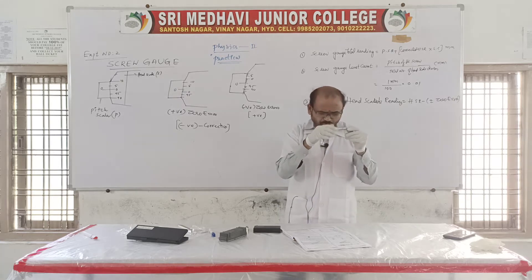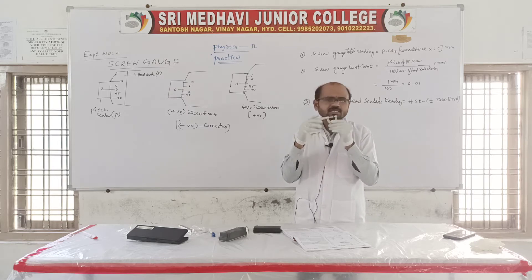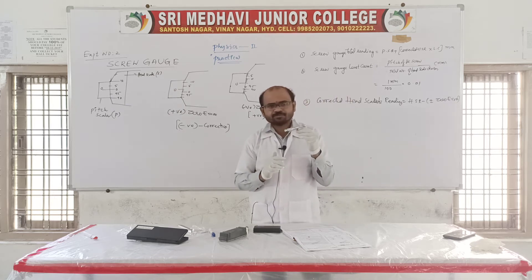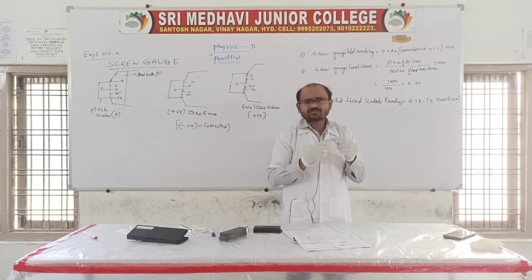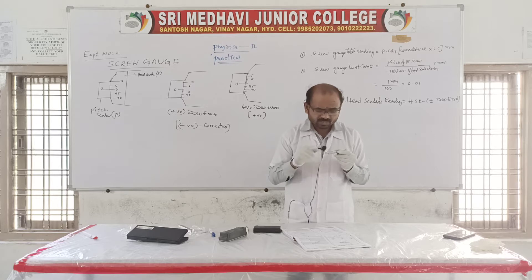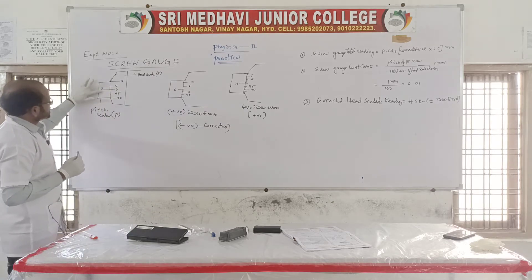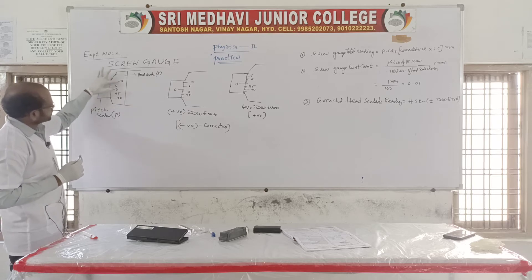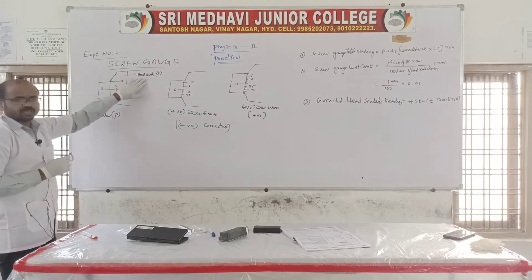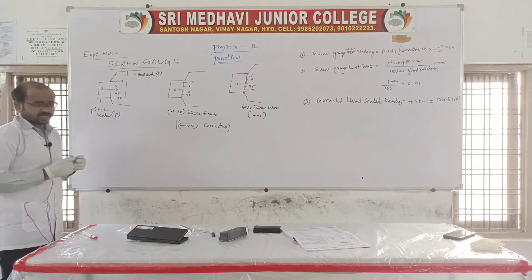On the head scale, divisions are provided from 0 to 100. After closing the instrument, check whether the zero on the pitch scale coincides with the zero on the head scale. The head scale has markings like 0, 5, 10, 20, 30 up to 95, with 100 divisions in total.